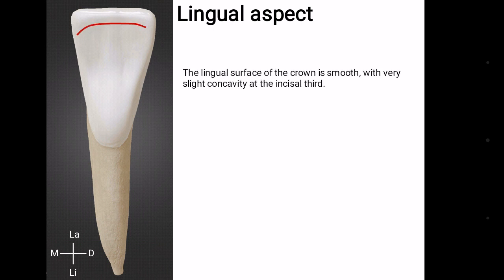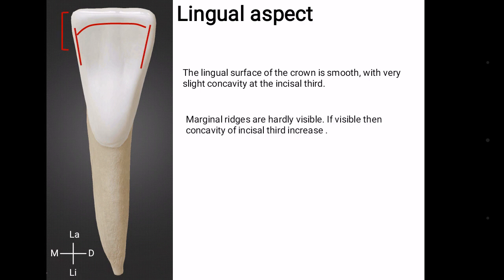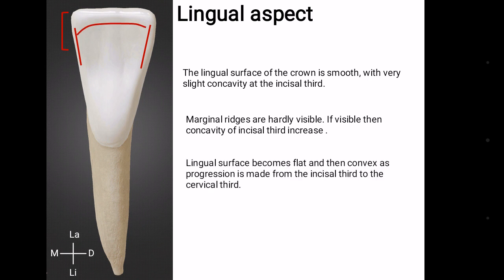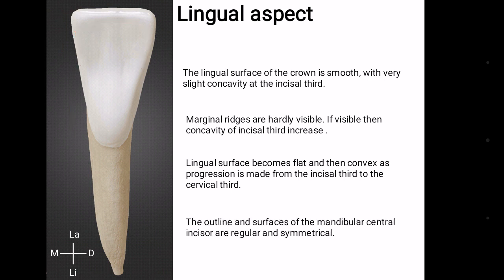Lingual aspect — that is the surface of the tooth which is towards the tongue. The lingual surface of the crown is smooth with very slight concavity at the incisal third. Marginal ridges are hardly visible; if visible, the concavity of the incisal third increases. The lingual surface becomes flat and convex as progression is made from the incisal third to the cervical third. The outline and surface of the mandibular central incisor are regular and symmetrical.